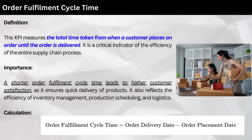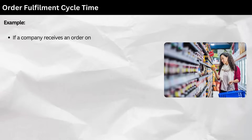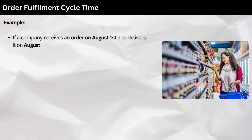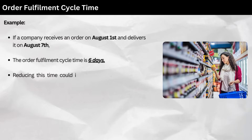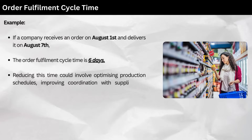Calculation: as follows. Example: if a company receives an order on August 1 and delivers it on August 7, the order fulfillment cycle time is 6 days. Reducing this time could involve optimizing production schedules, improving coordination with suppliers, or enhancing transportation logistics.